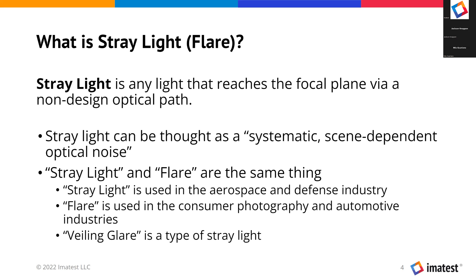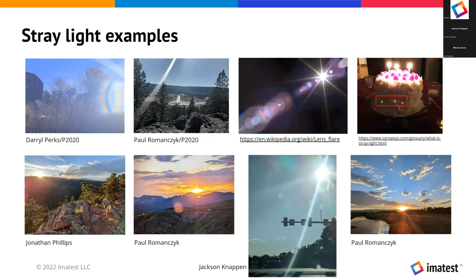Veiling glare is a type of stray light — another similar term that's used. Here are some examples of stray light that clearly show the issue. In the top left image, there are interesting stray light artifacts on the right side of the image, and there's also veiling glare leading to an overall loss of contrast throughout the rest of the image.